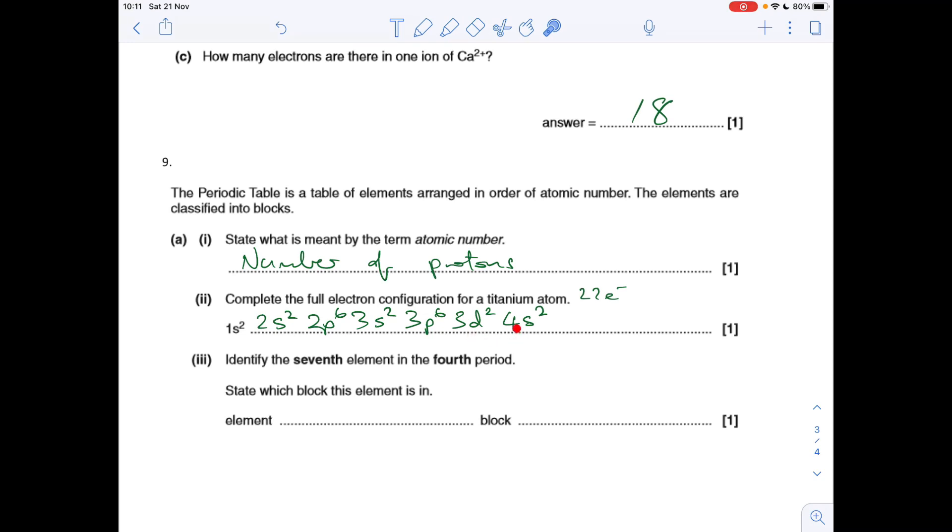Just what I said before: these can be either way around. I've just put all the third shell electrons together there. The fourth period is potassium to krypton, so the seventh element in that period is manganese, and that's in block d.